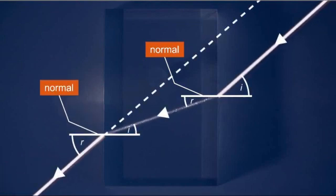The ray of light slows as it enters the block, so it always changes direction towards the normal. The ray of light leaving the block is always parallel to the ray of light entering the block.